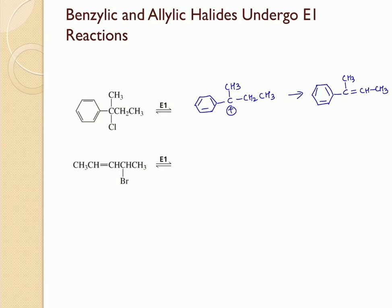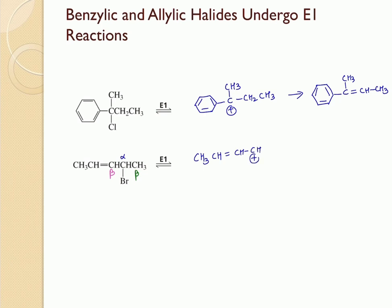Similarly, allylic halides can also undergo E1 elimination reactions. This is our alpha carbon. We cannot pull the hydrogen from this carbon because doing so would create an allene, which is relatively unstable. So we pull the hydrogen from this carbon to form our product. First, we form the allylic carbocation, and once that allylic carbocation is formed, the beta hydrogen will be abstracted, leading to the formation of the product.